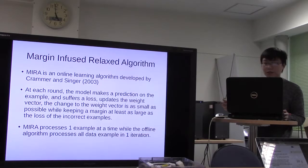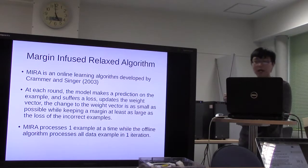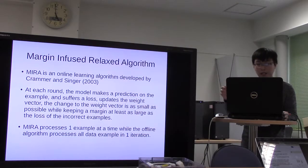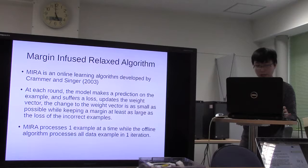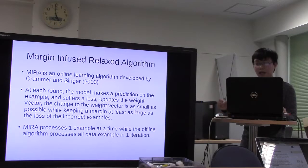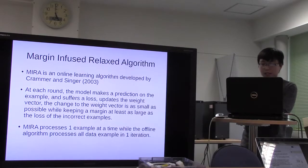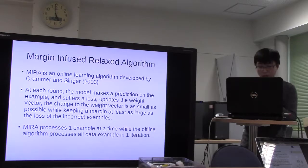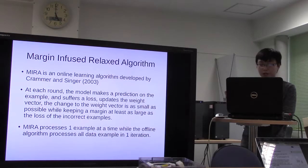Now an introduction to the MIRA algorithm — this is an online learning algorithm developed by Crammer and Singer in 2003. At each round, the model makes a prediction on a sample, suffers a loss function, and updates the weight vector. The change to the weight vector is as small as possible while keeping the margin at least as large as the loss of the incorrect example.